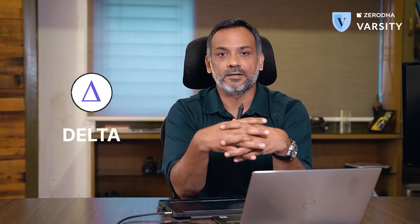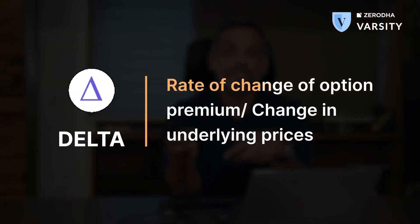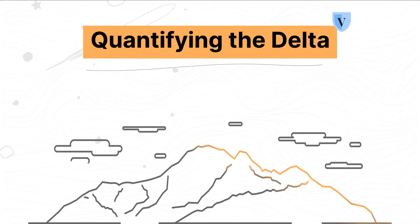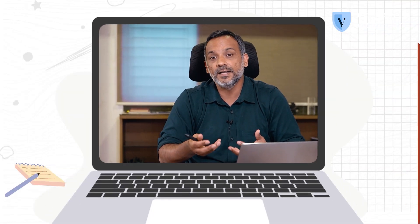Let's deal with the delta first. Delta is the rate of change of option premium with respect to the change in the underlying prices. To figure out if you want to be an option buyer or a seller, it's extremely important to quantify the extent of the move that you are expecting. There are multiple ways to do this — let me give you one simple example.